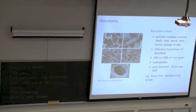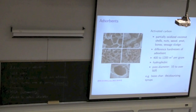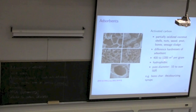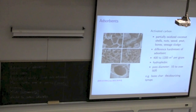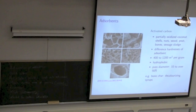Activated carbon — like the one just passed around from the Brita water filter — is made from coconut shells, nuts, or wood. It's partially oxidized to create the activation, and that material can then have an extremely high surface area for adsorption. The pore size is between 10 and 30 angstroms. Under SEM, you can see that porous structure clearly.